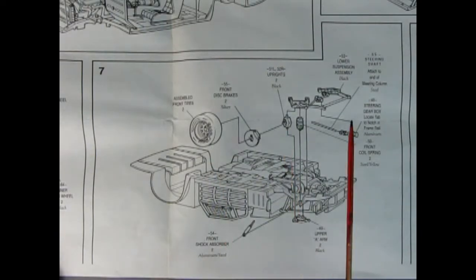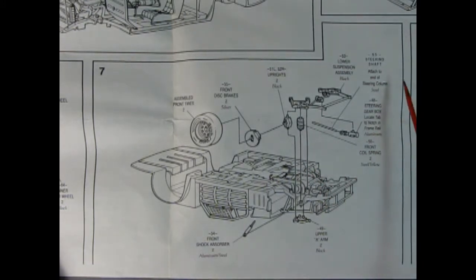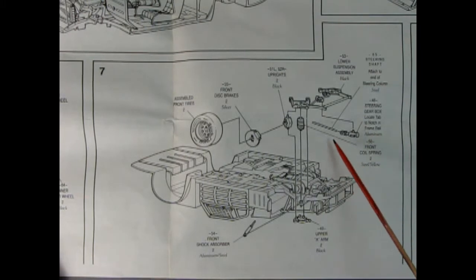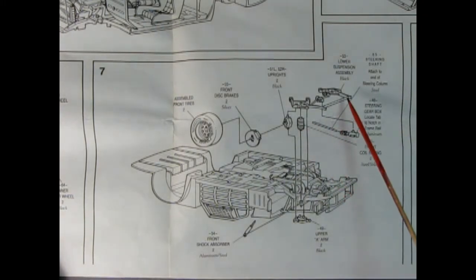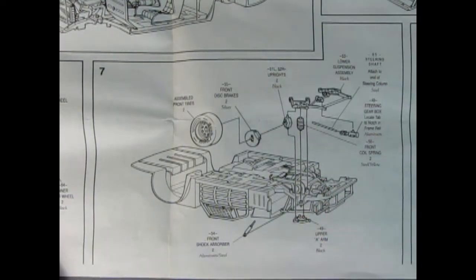Here we have panel seven. This is the undercarriage of our chassis going together now. We've got the steering shaft, the steering gearbox, the lower suspension, the springs - there's going to be one on each side. Then we've got our uprights here and disc brakes in the front. Then we put our front wheels on. There's shock absorbers and upper A arms as well. That's really highly detailed.